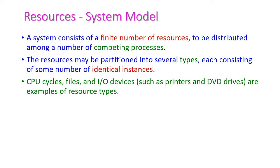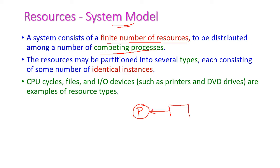Computer system resources come under the system model. The system consists of a finite number of resources, and these resources are to be distributed among a number of computing processes. If a process wants to execute, it requires some resources. The resources may be partitioned into several types, and each resource type consists of a number of identical instances.